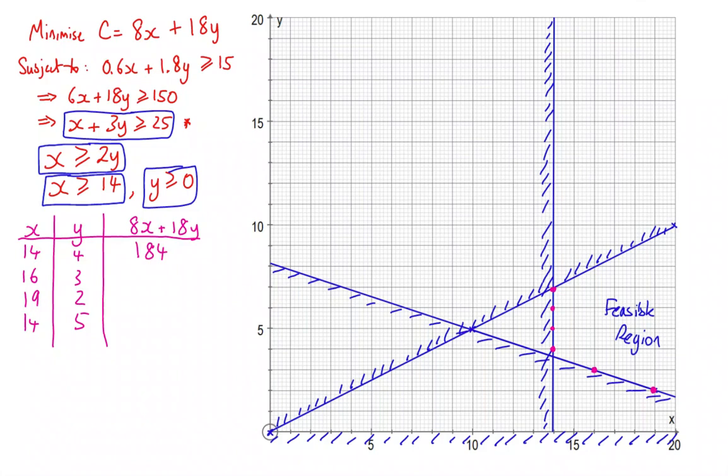8 lots of 14 plus 18 lots of 4 gives us 184. 8 lots of 16 plus 18 lots of 3 gives us 182. 8 times 19 plus 18 lots of 2 is 188. And 8 lots of 14 plus 18 lots of 5 is 202. These are all prices in pounds. So the minimum is actually 16, 3.